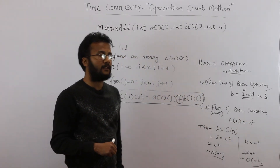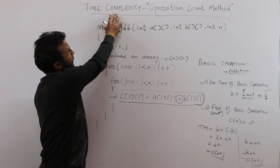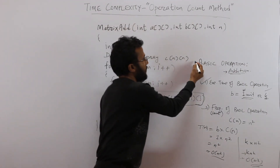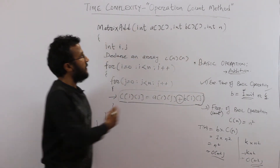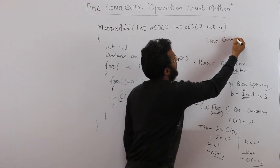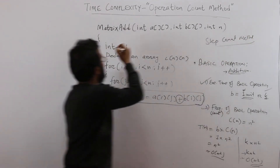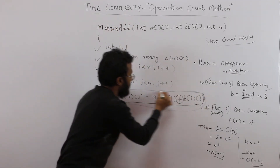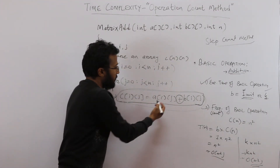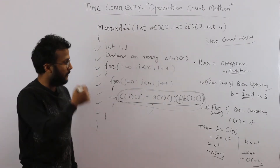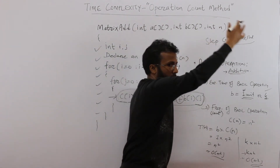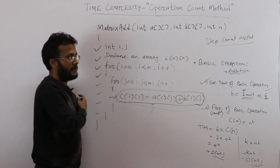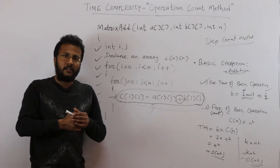This is how you find time complexity using the operation count method. One drawback is that the success of this method depends on how well you select the basic operation — that depends on your experience. In the next video, we will look at the step count method, where we consider the contribution of each and every statement to estimate time complexity, which addresses the limitation of this method.